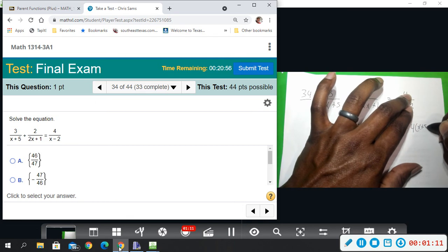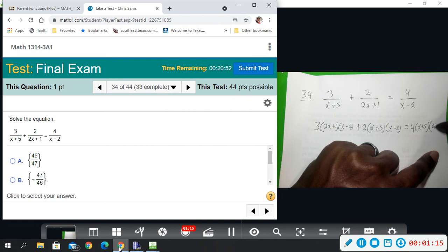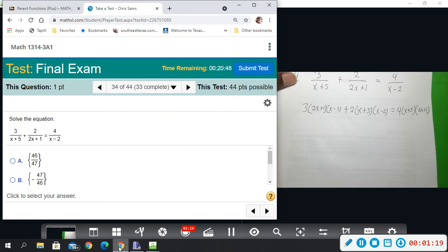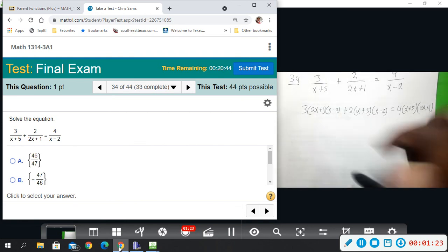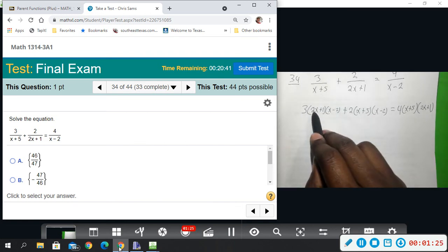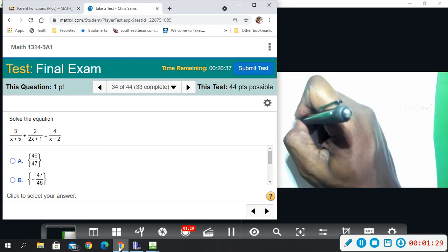Alright, so now I'm going to do distributive property, simplify like terms, and solve. So I'm going to distribute 2x and x, leaving the three on the outside.